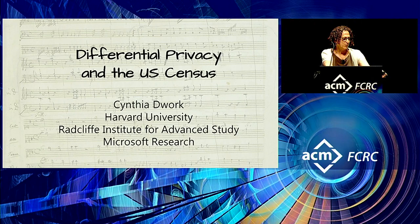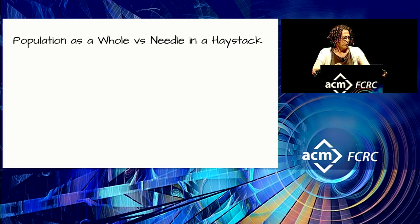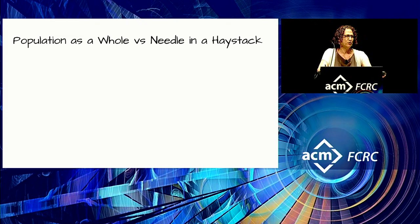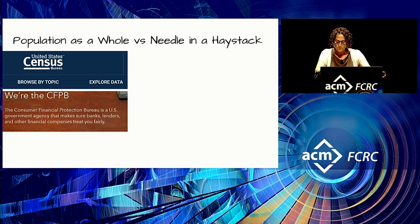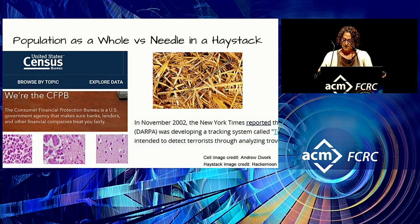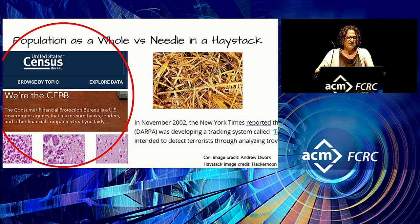The topic is differential privacy and the US Census. I want to differentiate between two kinds of data analysis: statistical understanding of the population as a whole — for example, census data, or analyzing loan data for evidence of systematic discrimination as done by the Consumer Financial Protection Bureau — and finding a needle in a haystack, as in the Total Information Awareness Program aimed at finding terrorists. Differential privacy is about the first kind of analysis and is the wrong tool for finding a needle in a haystack.